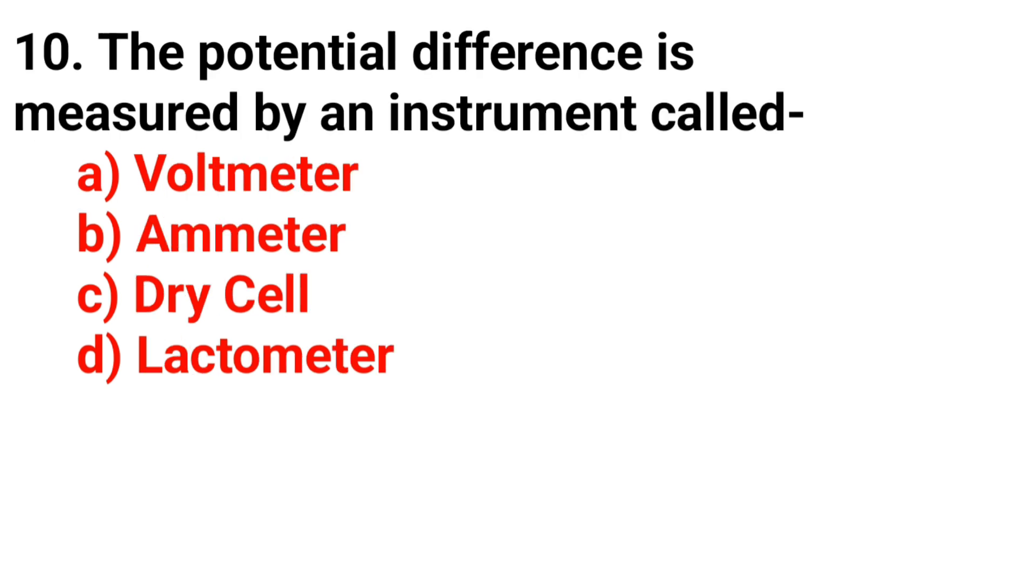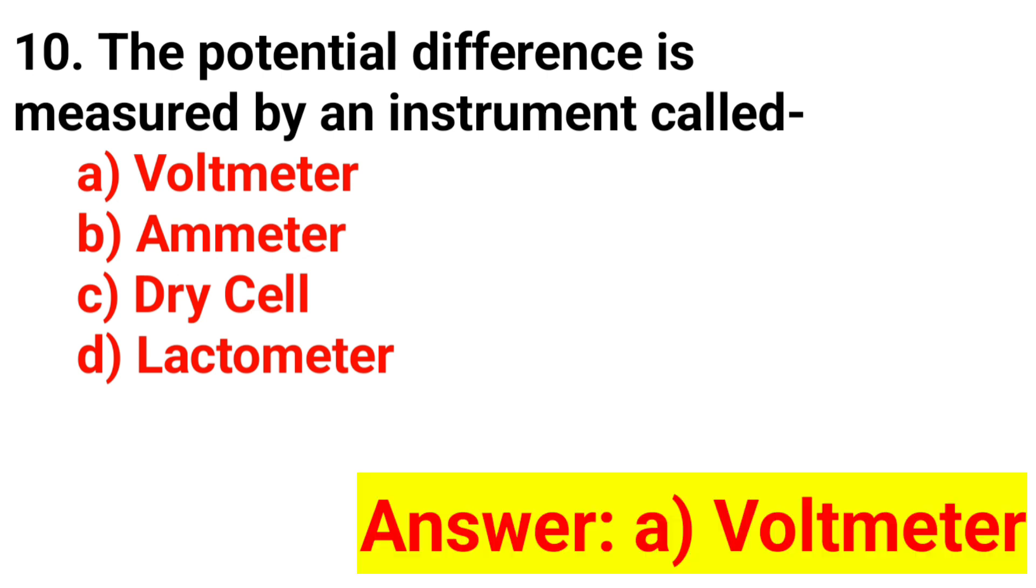Question number 10. The potential difference is measured by an instrument called? The answer is Option A, voltmeter.